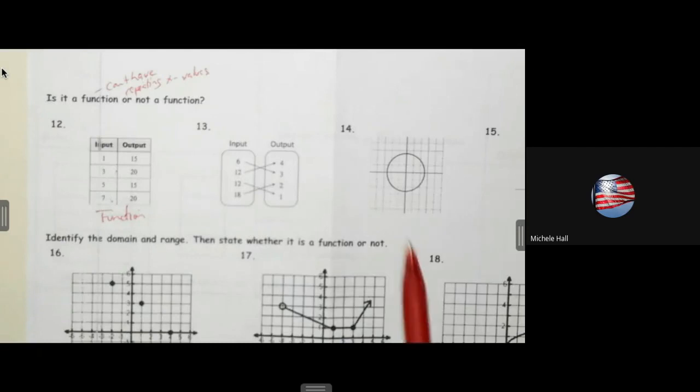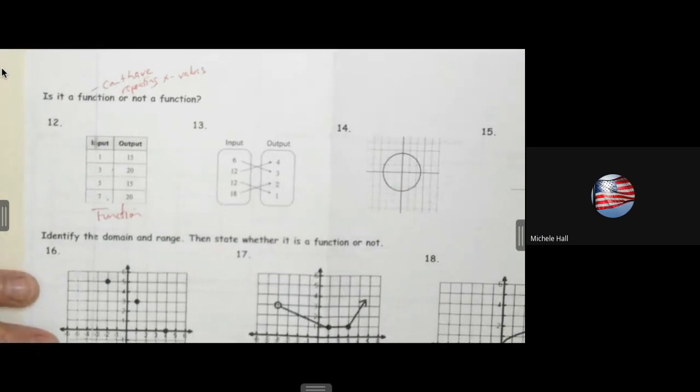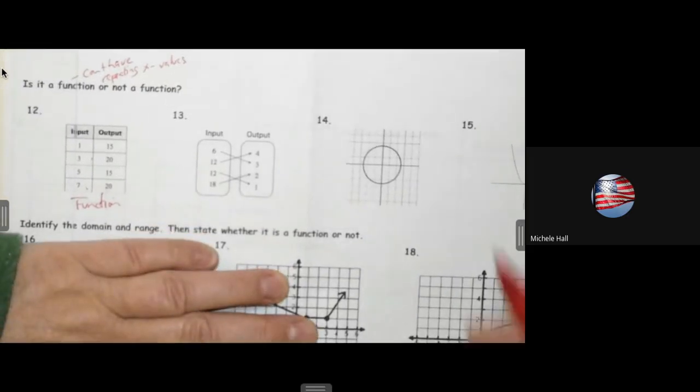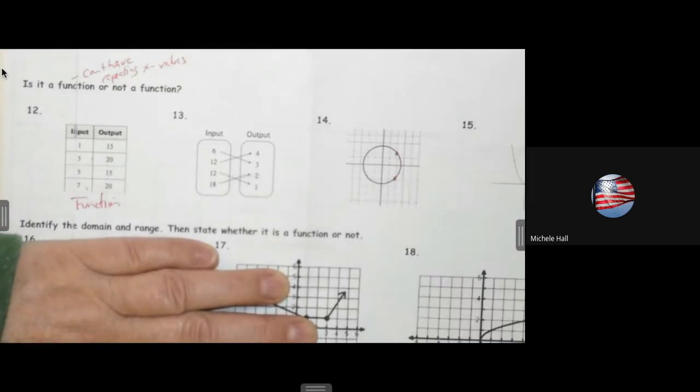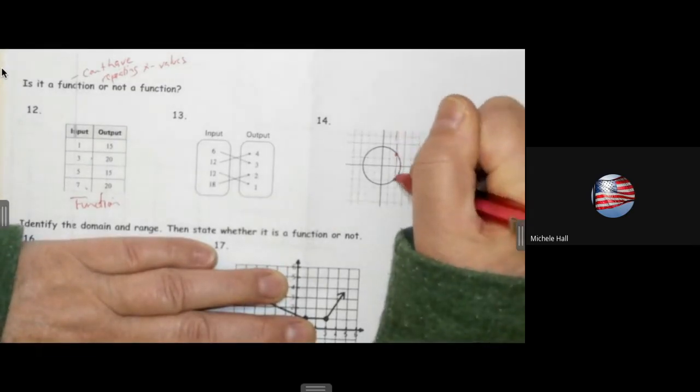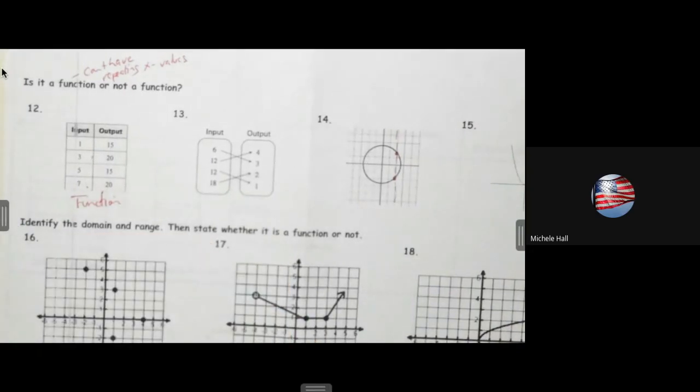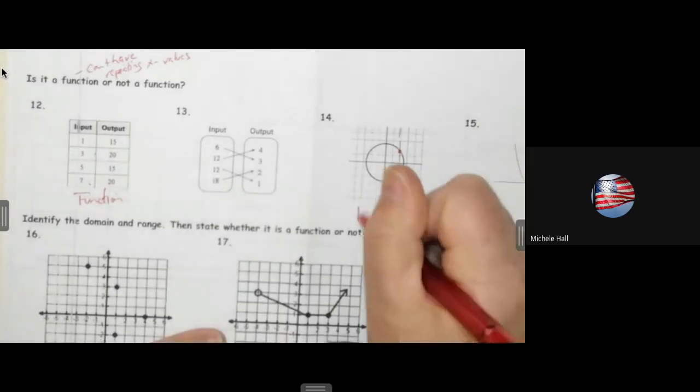What about number 14? How do I know if that's a function? Does it have any repeating x values? Well, if I pick this point on the circle and this point right above it, they would have the same x values, right? But there's another test that we do for pictures, it's called the vertical line test. If the vertical line crosses the function more than once, then you know that it's not a function. And another reason is because it does have those two x values, so this would not be a function.